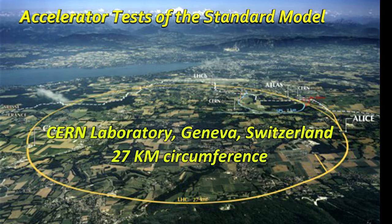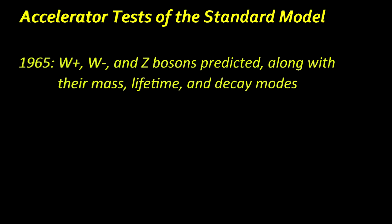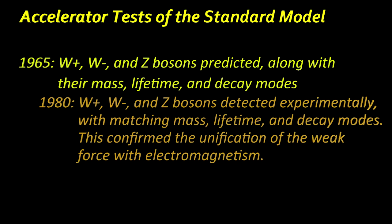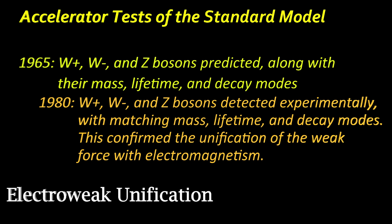In the 1970s, the accelerator experiments were said to be testing quantum field theory in the standard model. One of the most famous tests was the search for the W and Z bosons. They were predicted in 1965 when electroweak theory was developed. Electroweak theory unifies the weak force with electromagnetism. The bosons were predicted to have a mass around 90 GeV, and by 1980, they had been detected with that mass.